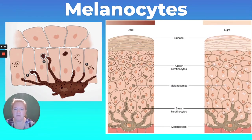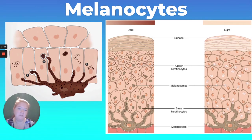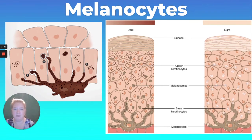Melanocytes produce melanosomes — those vesicles filled with melanin. The melanin protects the nucleus and creates pigment. You can see the difference between darker skin and lighter skin — it's the type of melanin and the amount of melanin that's produced.